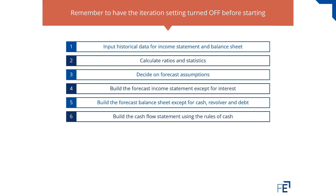It feels like we've almost finished — the income statement, balance sheet, and cash flow statement are all basically done. The only line items that haven't been filled in are all interest-related. Cash, revolver, and debt all involve interest expense or interest income, so we need to deal with them.